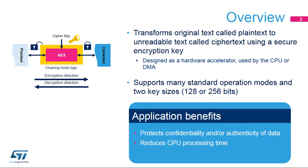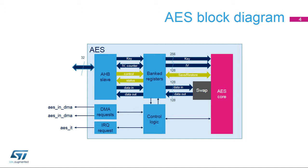The AES peripheral supports multiple chaining modes, protecting data confidentiality or data confidentiality with authenticity depending on the mode. Encrypting plaintext data into ciphertext and inversely decrypting ciphertext into plaintext requires intensive computing, which represents a huge workload when done entirely by software. The AES hardware accelerator lightens the CPU's workload by performing encryption and decryption operations in the AES core.